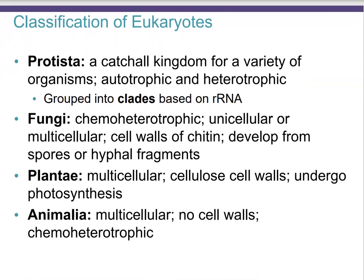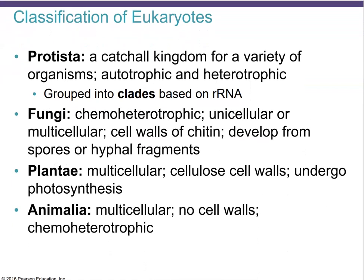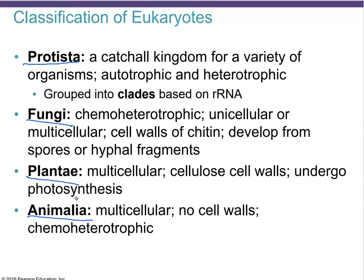Moving on to the classification overview of the eukaryotes, we have four kingdoms: Protista, Fungi, Plants, and Animals. Protista is a grab-bag category of single-celled eukaryotes. They're either algae-like because they are autotrophic and photosynthesize, referred to as more plant-like protista, or they're heterotrophic, called more animal-like protista — usually referred to as protozoa.